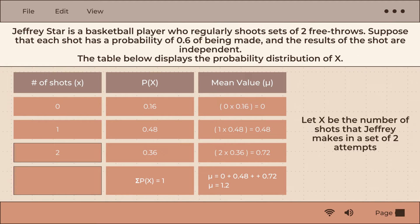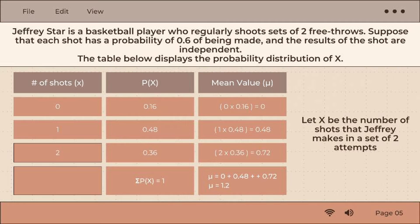Jeffree Star is a basketball player who regularly shoots sets of two free throws. Suppose that each shot has a probability of 0.6 of being made, and the results of the shot are independent.